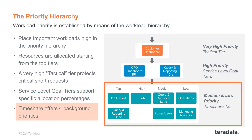And then at the base there is what we call the timeshare tier, composed of four distinct priorities. This is the work that's important to the business but doesn't have a clear SLA associated with it.